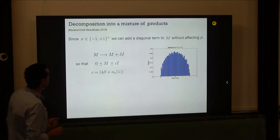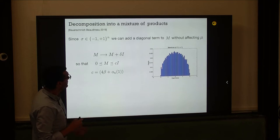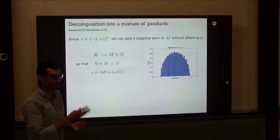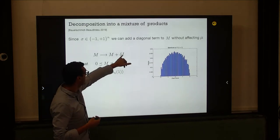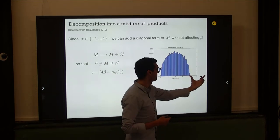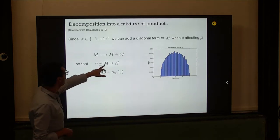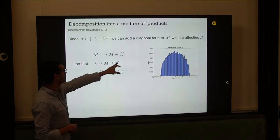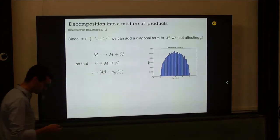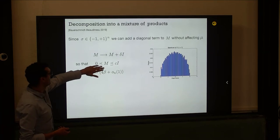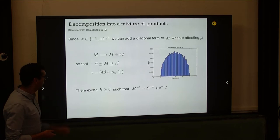Let me sketch the proof. We're on the hypercube with a quadratic form in the Hamiltonian exponent. Since we're on the hypercube, sigma squared equals one, so we can add any diagonal. In particular, add delta times identity to shift the entire spectrum to the right so the smallest eigenvalue becomes positive. Now M is positive and upper bounded by C times I, where C is four times beta.